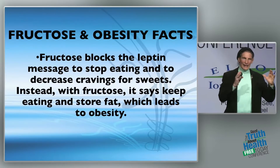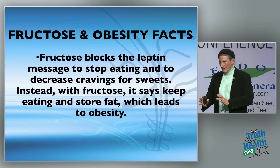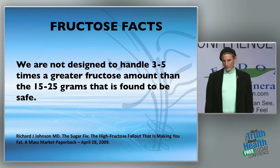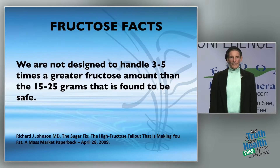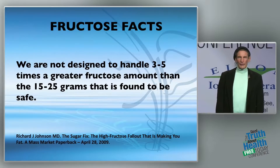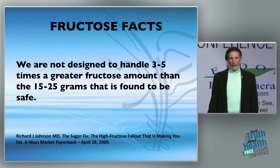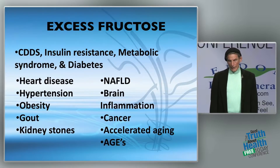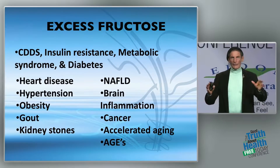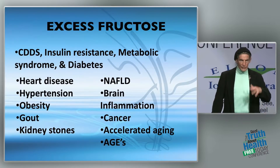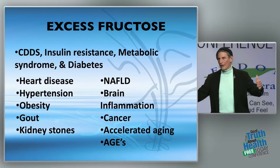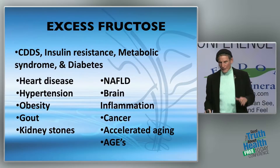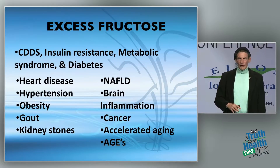Because fructose blocks the fullness feedback system, a lot of people end up overweight — that satiety signal never gets turned off. Fructose blocks leptin, which says 'stop eating and stop craving sweets.' We can handle about 15 to 25 grams of fructose without getting out of balance, but the average American consumes about 81 grams. The resulting conditions include heart disease, hypertension, gout, obesity, kidney stones, and non-alcoholic fatty liver disease.